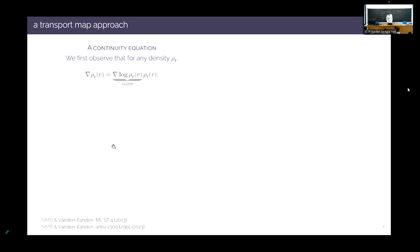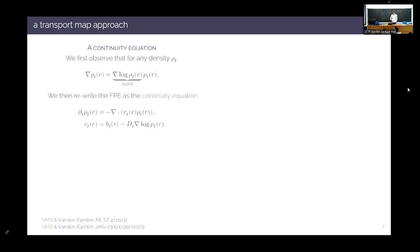Let's take insight from generative modeling — namely diffusion models. For any density rho, I can write its gradient as grad log rho (the score) times rho. This lets me rewrite the Fokker-Planck equation as a continuity equation, moving the diffusion term inside the drift to define a new velocity field V_t = b_t minus D_t times grad log rho_t. The key insight: grad log rho does not require normalization, so if I formulate an algorithm that only requires the score, I've avoided the need to compute the normalization integral.